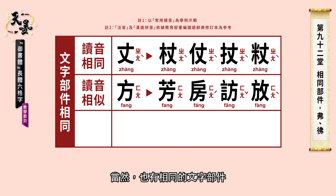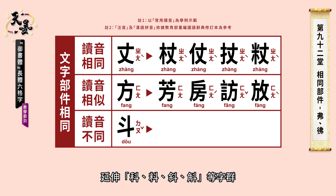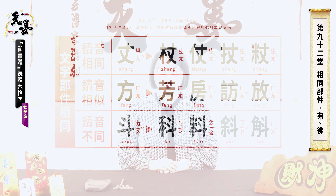Of course, there are same components with different pronunciations. For example, dou. Extensions like ke, liao, xie, hu — their pronunciations are not decided by dou. So the way of learning words by words is grasping the core components in different characters, then analogize the extensions for efficient learning.